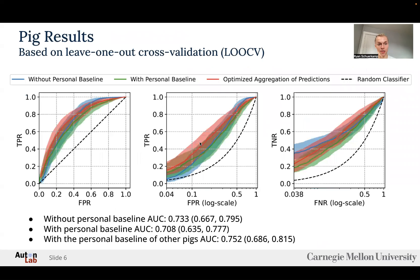These are the pig results for the classifiers based on leave-one-out cross-validation. Based on the receiver operating curves shown here and the area under them, we see that the model with a personal baseline of all the other pigs tends to be the best across operating points. So we use this model for pig resuscitation decisions and apply it to the humans.